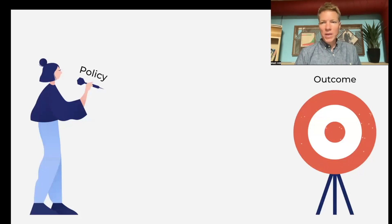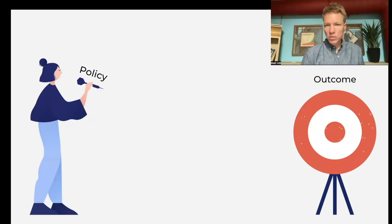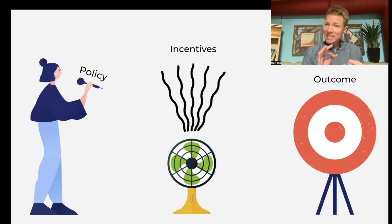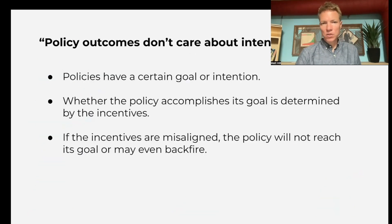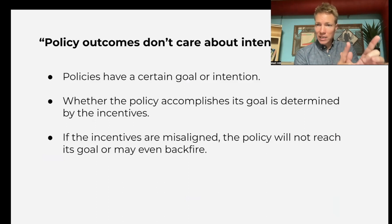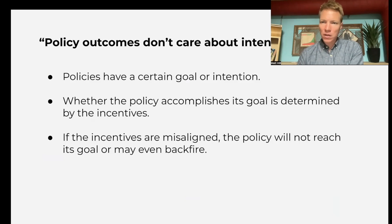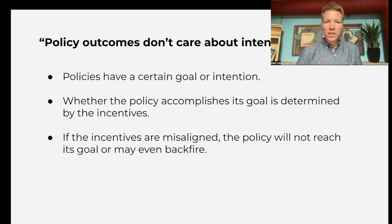This really comes into play when making policy. Every policy has an intent — this is what we're trying to do, whether it's lowering homelessness, raising wages, or giving people better healthcare. It has a goal. But if the incentives are wrong, the policy's outcome will not match its intent. Policy outcomes don't care about the intentions — just because a policy says it's designed to decrease homelessness doesn't necessarily mean that will be the outcome. What really matters is the incentives.